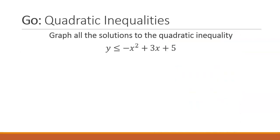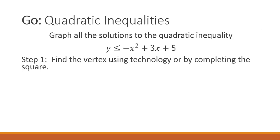In the second part of the go we are asked to graph all the solutions to the quadratic inequality y is less than or equal to negative x squared plus 3x plus 5. In step 1 we should find the vertex using technology or by completing the square. If we complete the square we should get negative x minus 3 halves squared plus 29 fourths equals 0. That means that the vertex is 3 halves comma 29 fourths or 1.5 comma 7.25.